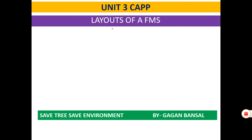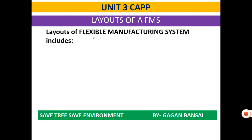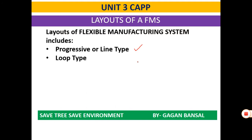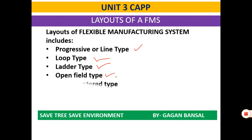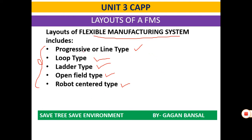Layouts of Flexible Manufacturing System are of 5 types: first is Progressive or Line Type, second is Loop Type, third is Ladder Type, fourth is Open Field Type, and fifth is Robot Centered Type. We will be covering all these types one by one.